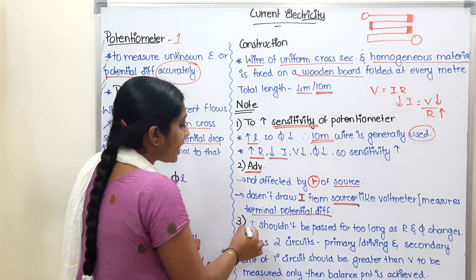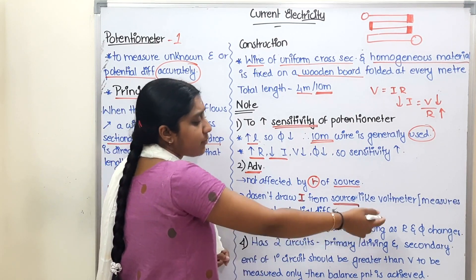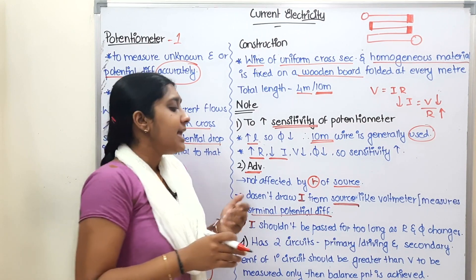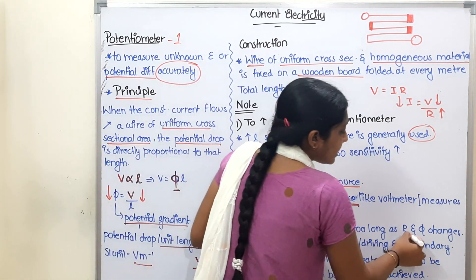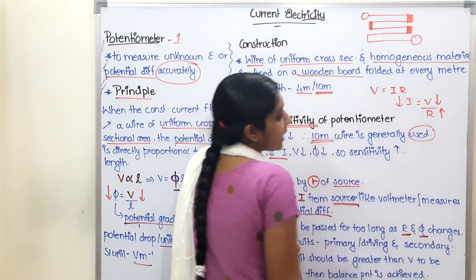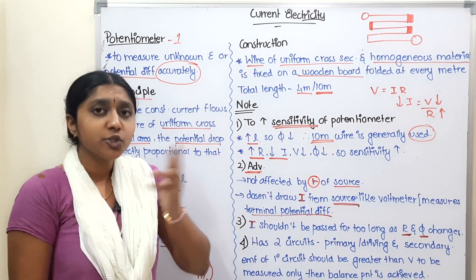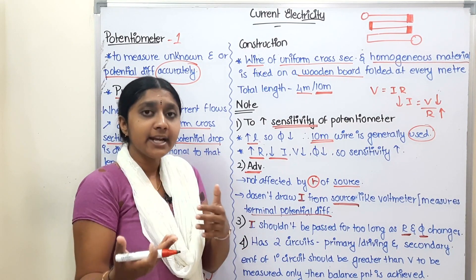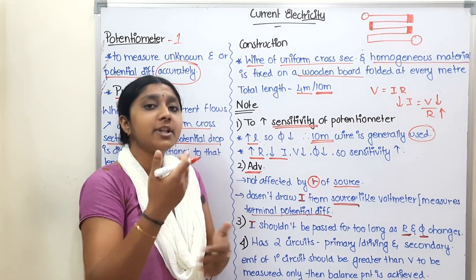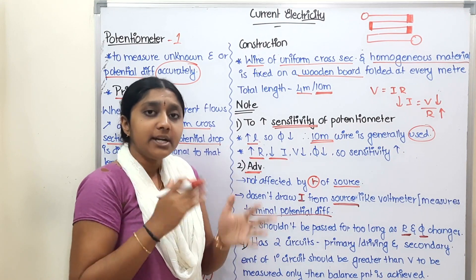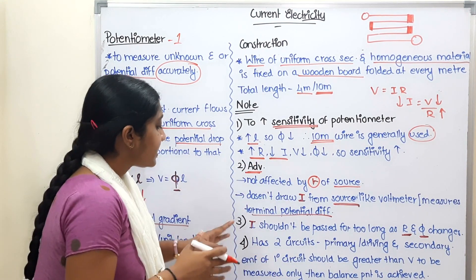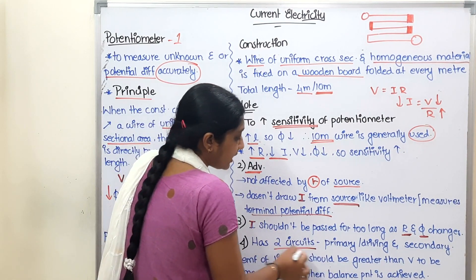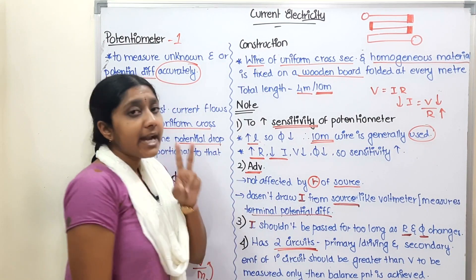Important precautions: current should not be passed through the potentiometer wire for too long, as this can change the resistance and affect the potential gradient, making readings inaccurate. Also, in a potentiometer circuit there are two major circuits: the primary or driving circuit, and the secondary circuit.